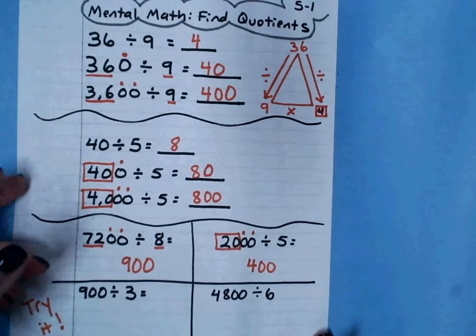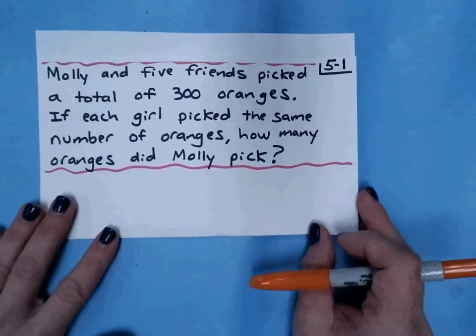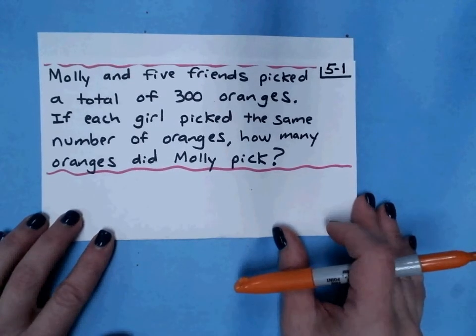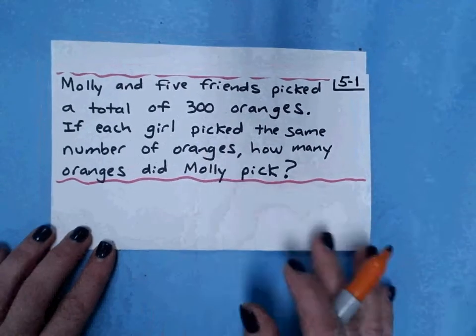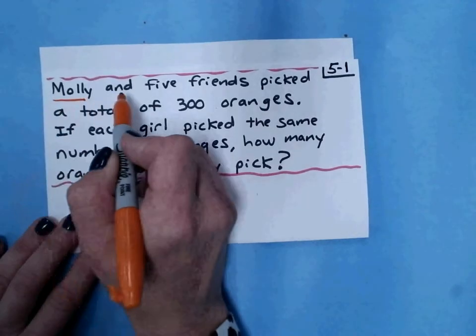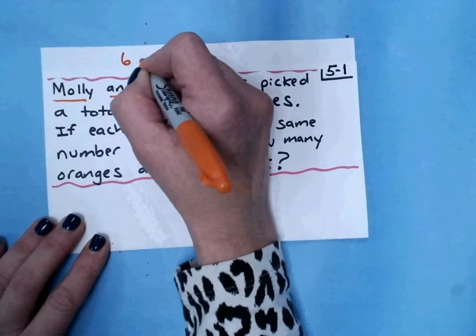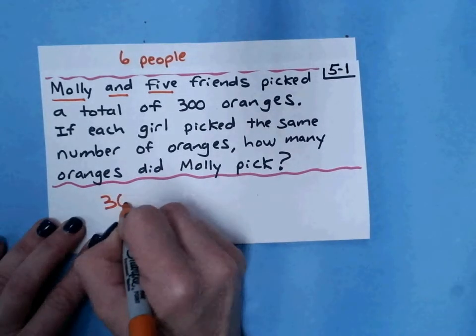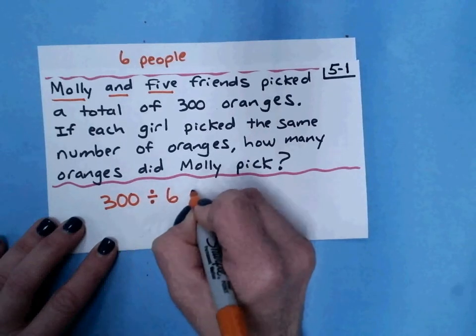The second thing I do want to go over is the word problems that we did in class today. Here's one of them. Molly and 5 friends picked a total of 300 oranges. If each girl picked the same number of oranges, how many oranges did Molly pick? You want to be careful here with the wording. It's Molly and 5 friends. So Molly and 5 friends is actually 6 people. If they had 300 oranges and each picked the same amount, I would divide that by 6.